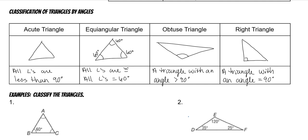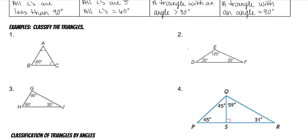All right, so let's work on classifying. If all of these have congruent angles and they're all 60 degrees, this is equiangular. This one has an obtuse angle, so it's an obtuse triangle.